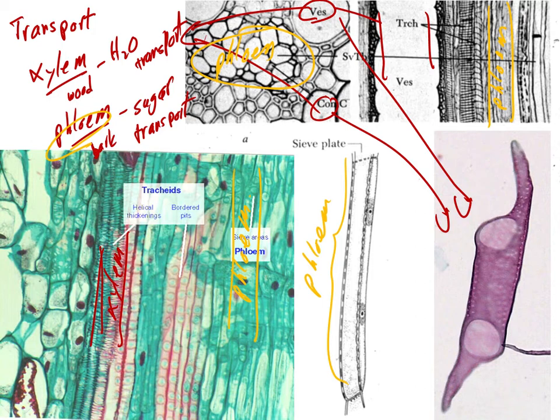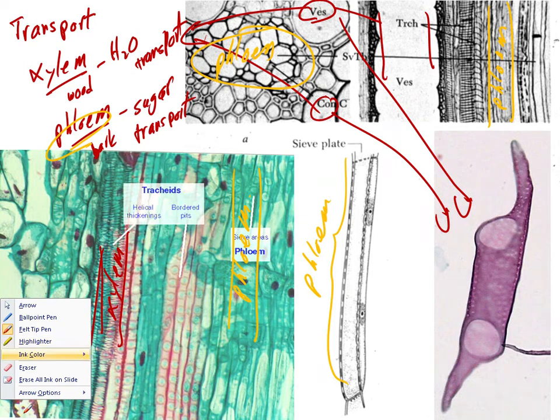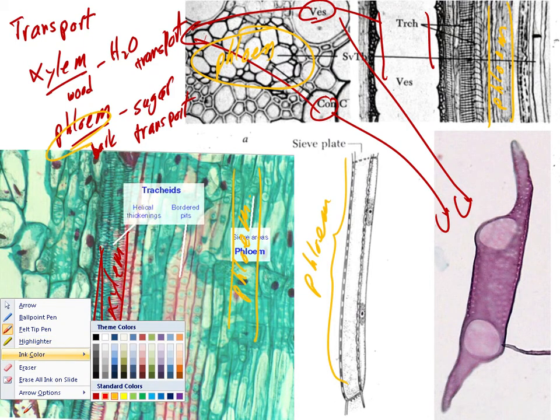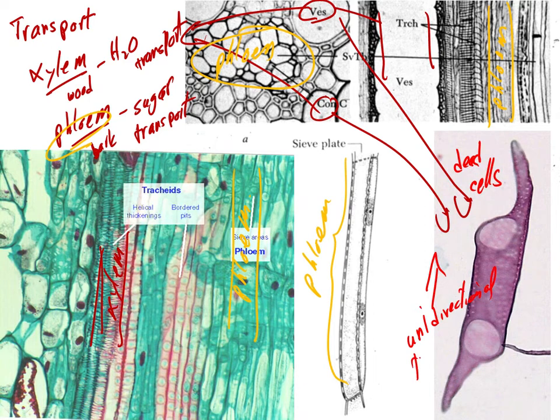And then one more point, the transport of xylem is unidirectional. Water is only transported upwards from the roots up to the leaves in the xylem. And that's because the xylem is dead when it functions. So these cells of the xylem are dead.